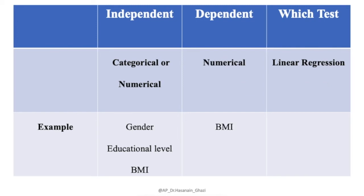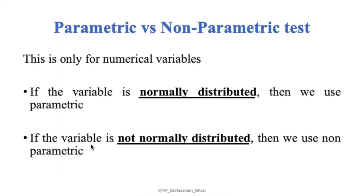Similarly, for linear regression, the independent variables can be a mix of categorical and numerical — such as gender, education level, and BMI — but the dependent variable, your outcome, must be numerical, like BMI, weight, height, or age. In that case, we use linear regression.